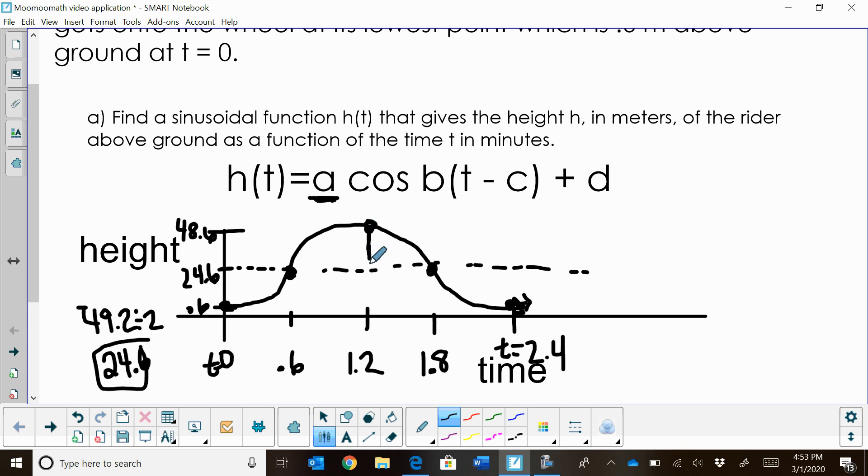A is my amplitude, and the amplitude is the distance off the midline. So from 24.6 to 48.6, that's 24 meters. Well, that makes sense because my diameter is 48. So I'm going to plug in 24 for A. Now, my D value. The D value is my midline. So I'm going to plug in 24.6 for the midline.